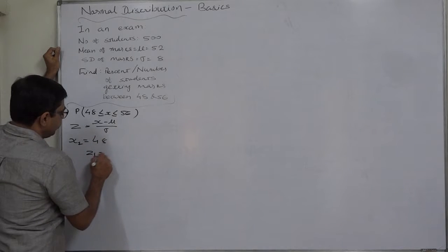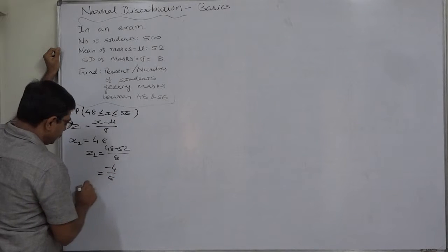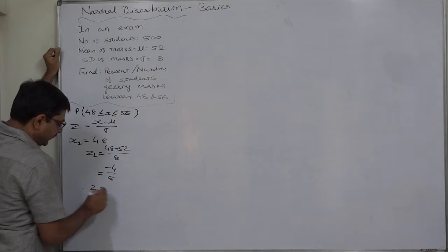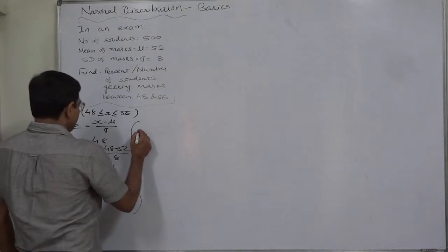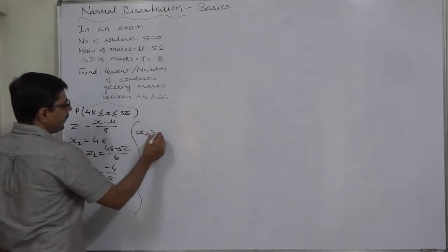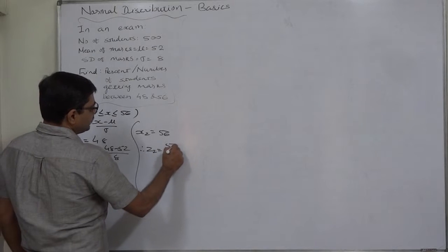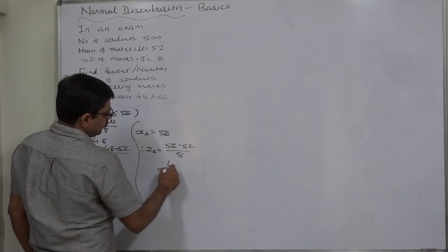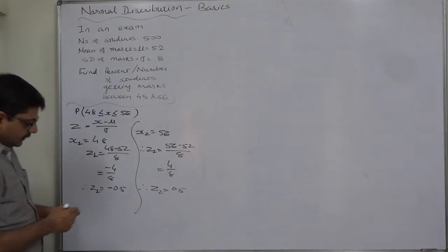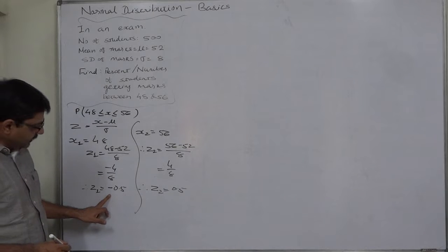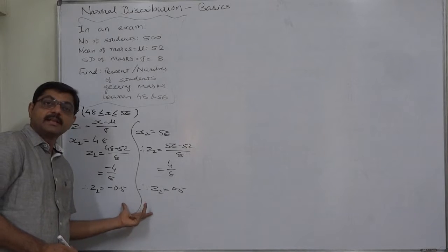For X = 48 (lower limit), Z₁ = (48 − 52) / 8 = −4 / 8, so Z₁ = −0.5. For X = 56 (upper limit), Z₂ = (56 − 52) / 8 = +4 / 8, so Z₂ = +0.5. We are interested in the area between these two Z limits.